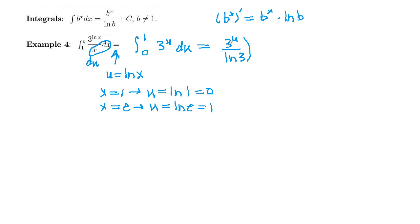Now, this multiplication by 1 over the log of the base, which is the same as dividing by log of the base, we can factor that out of the evaluation. So 1 over ln of 3, we can factor out. And then we're just evaluating 3 to the u from 0 to 1.